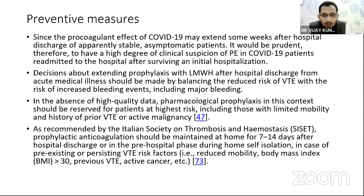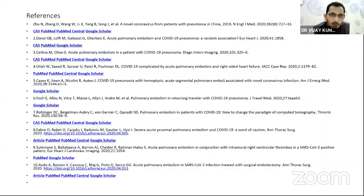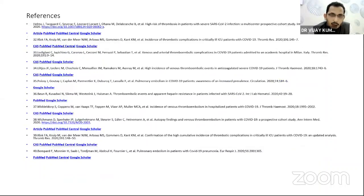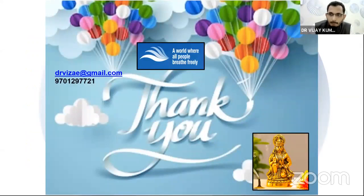For prophylactic anticoagulation at the time of discharge, the Italian Society of Thrombosis and Haemostasis guidelines recommend that those with high risk of thrombosis — such as BMI greater than 30, previous history of venous thromboembolism, or active cancer — should receive at least two weeks of prophylactic anticoagulation. With this, I hand over to Dr. Nandagopal. Thank you.